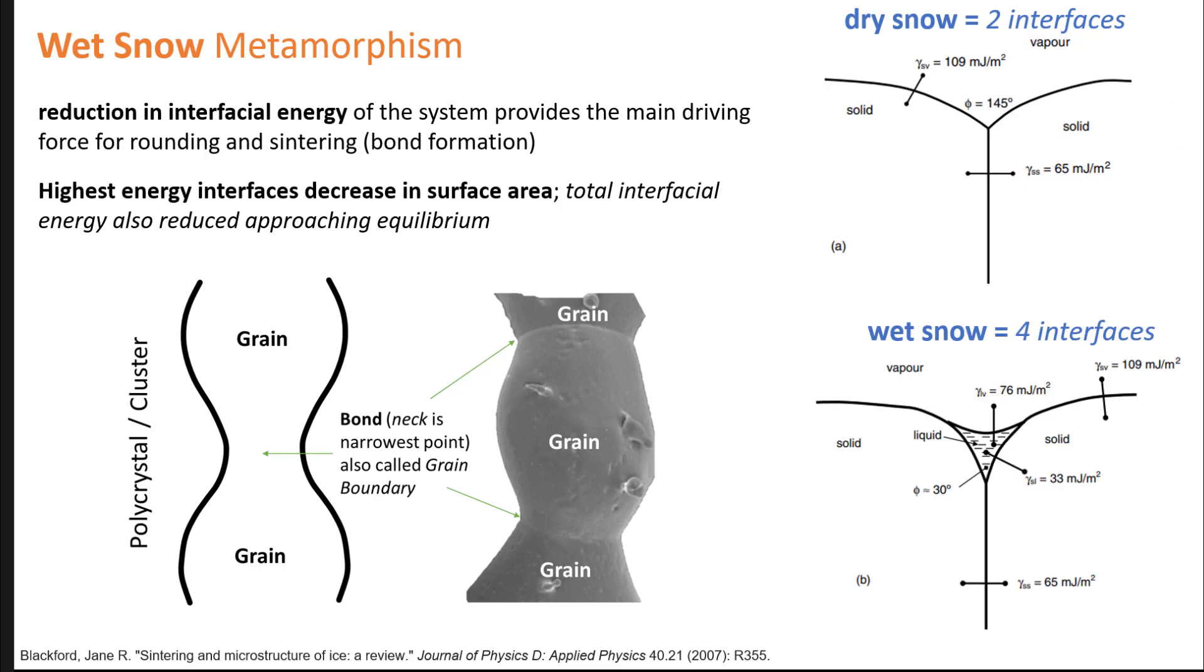In wet snow where we have all three phases present, we have a more complex set of interfaces. We have four. We have solid-vapor, that's ice and vapor at 109 just like before. We have solid-solid at 65. But now we have solid-liquid at 33 and liquid-vapor at 76. We have essentially all the phases present. We have liquid water which facilitates the diffusion of water molecules at all three of these interfaces at a much faster rate than in dry snow. It's the net reduction, the overall reduction of all of these energies that is the driving force and trajectory towards equilibrium for grain bonding and sintering in wet snowpack.